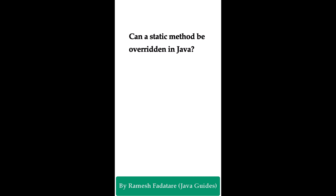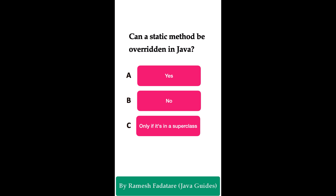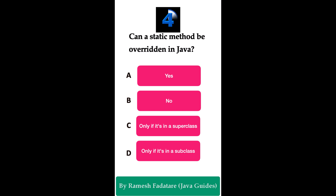Can a static method be overridden in Java? Option A: yes. Option B: no. Option C: only if it's in a superclass. Option D: only if it's in a subclass. The correct answer is no. Static methods belong to the class, not to instances, and cannot be overridden in a subclass. Since static methods belong to the class itself, they cannot be dynamically changed. Instead, static methods can be hidden in subclasses using the same method name, but this is not true overriding.